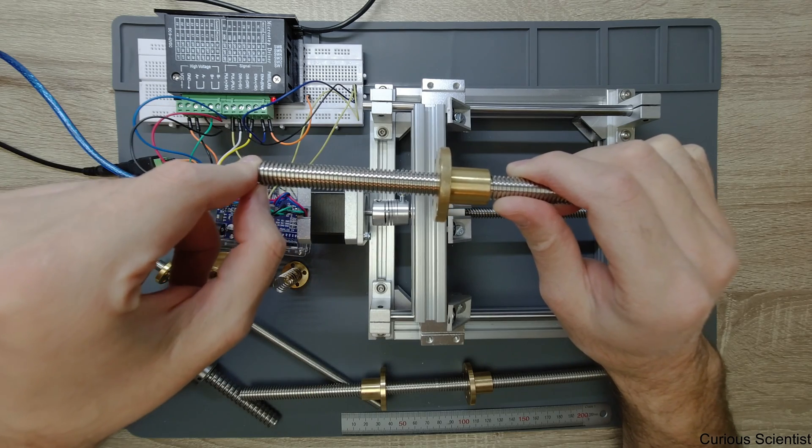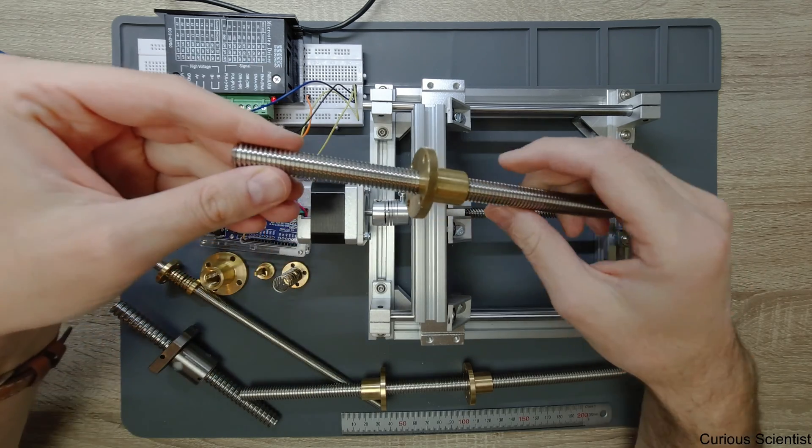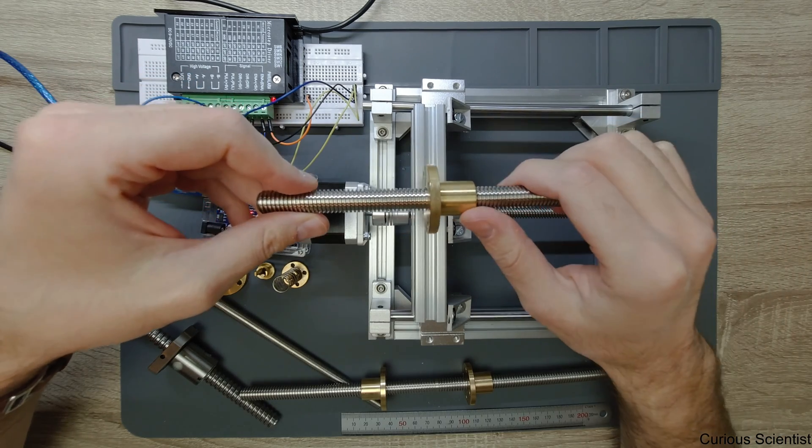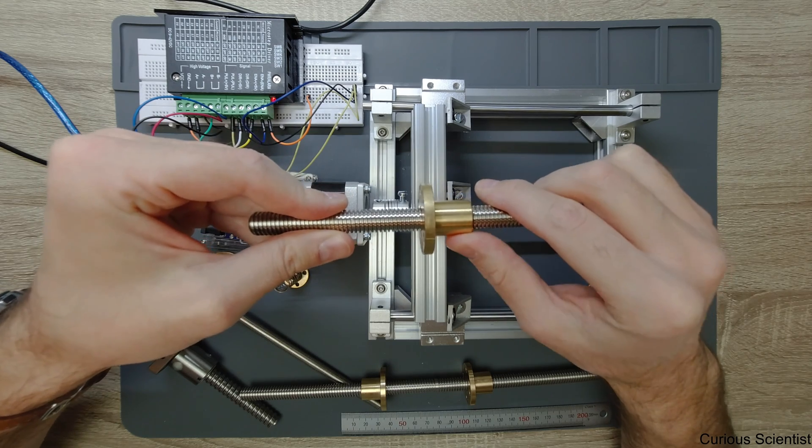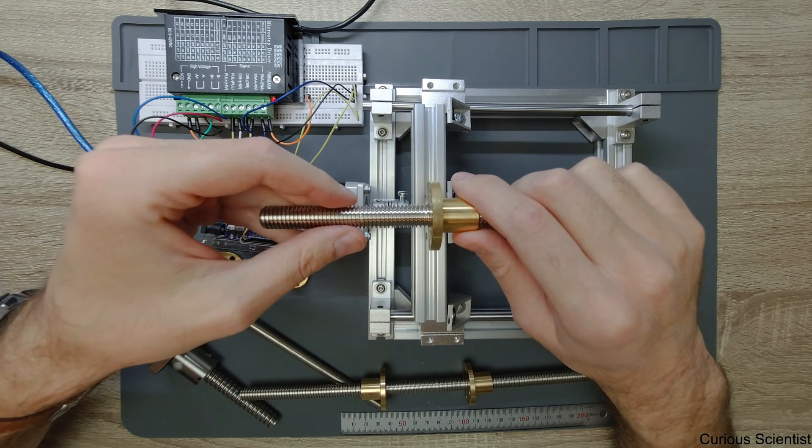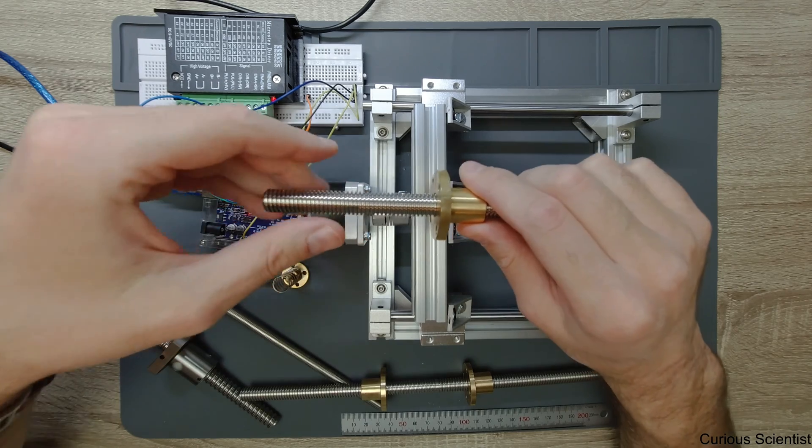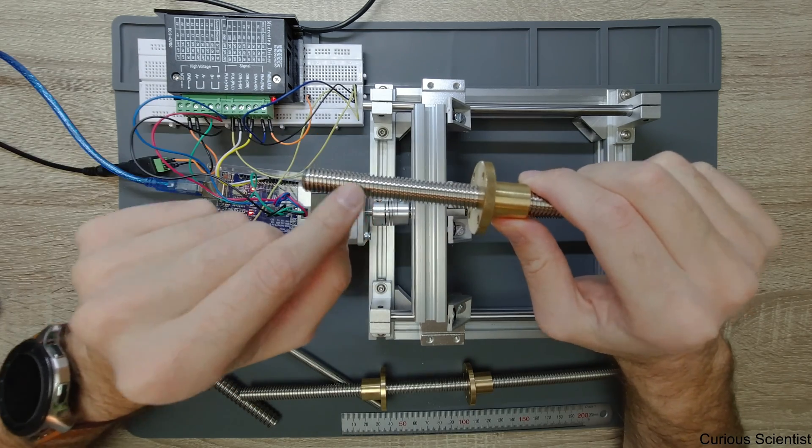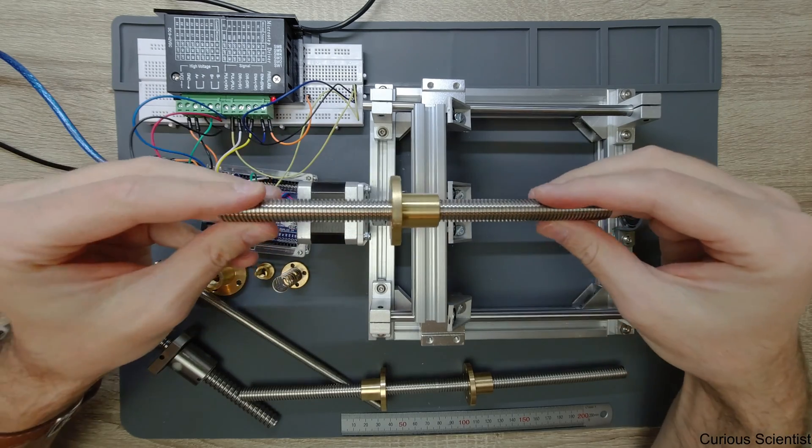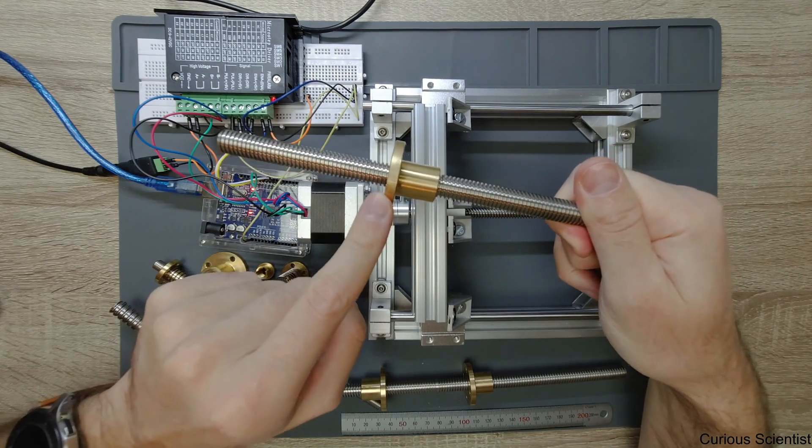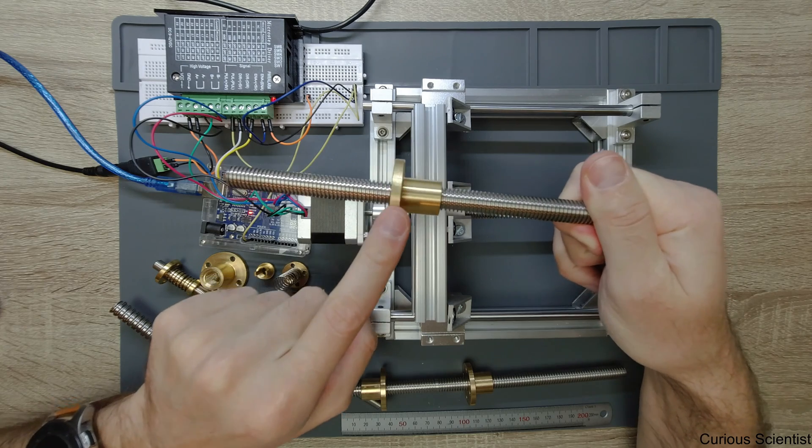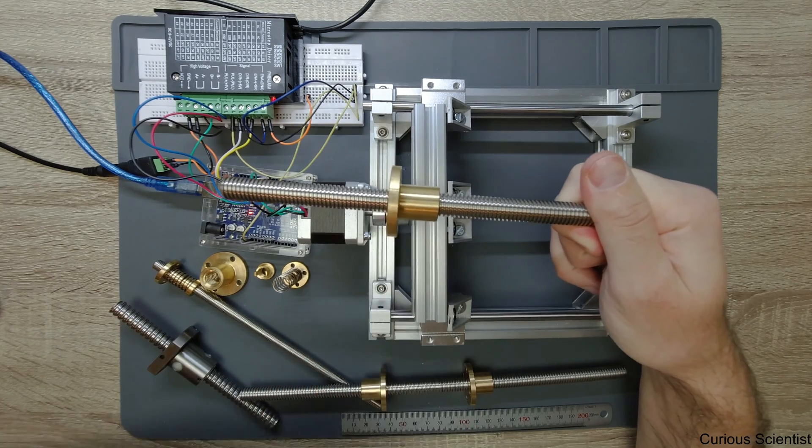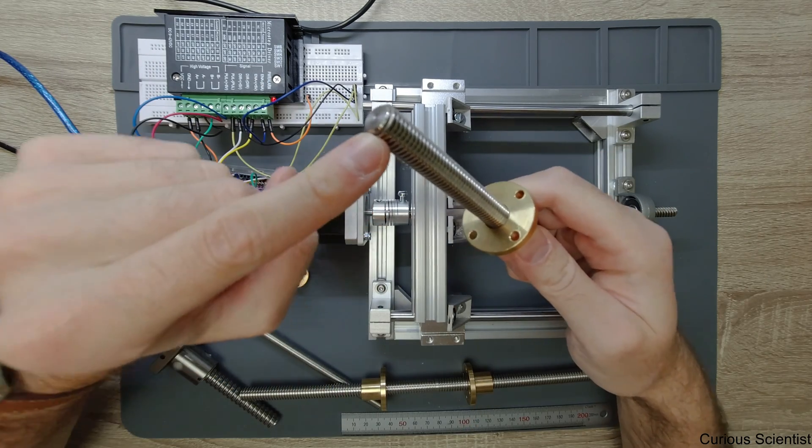This distance is determined by the parameter of this system which is called the lead, and usually it's two millimeters for commonly used lead screws like those used in the Z axis of 3D printers. So you do one rotation and then the object which is attached to the screw will move two millimeters, and it's a single start.